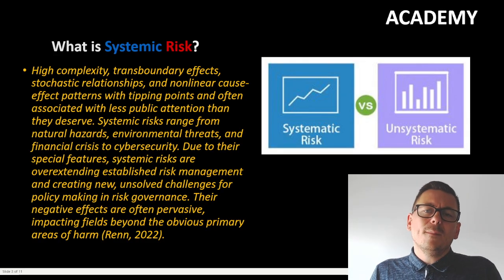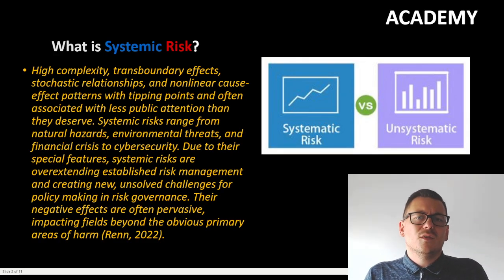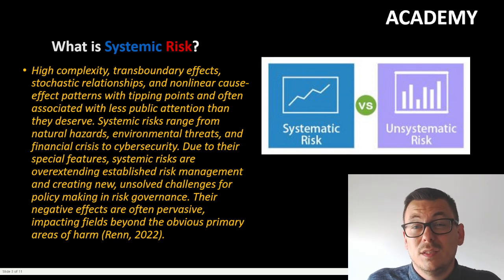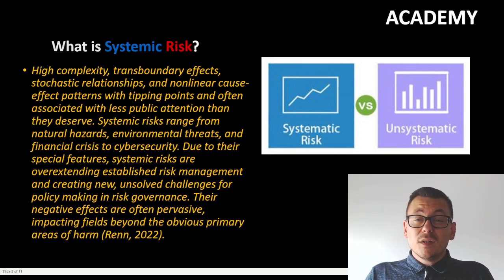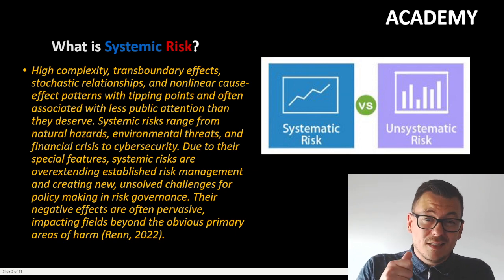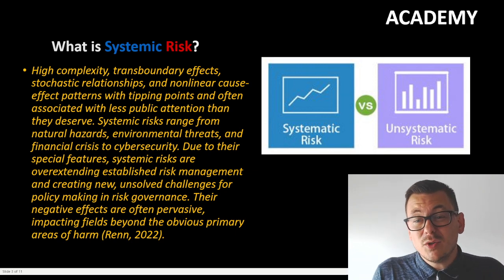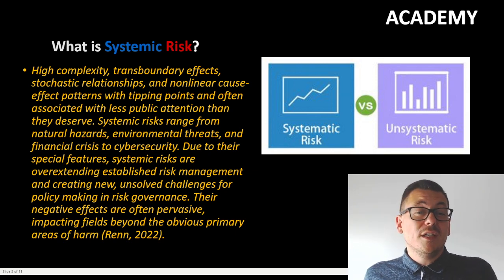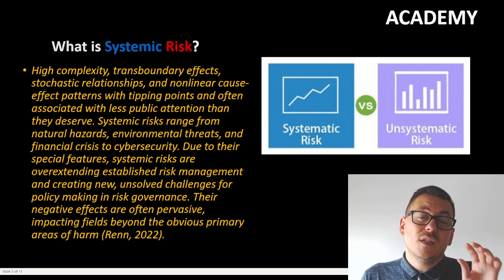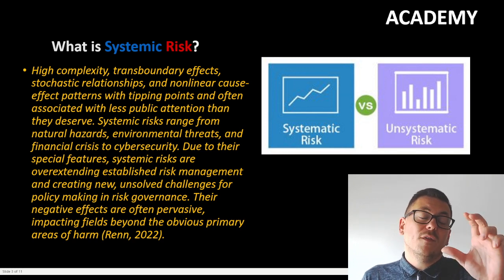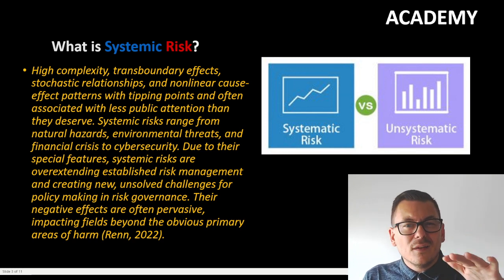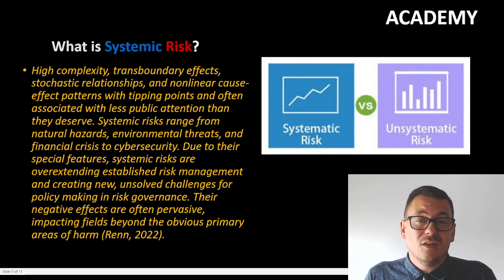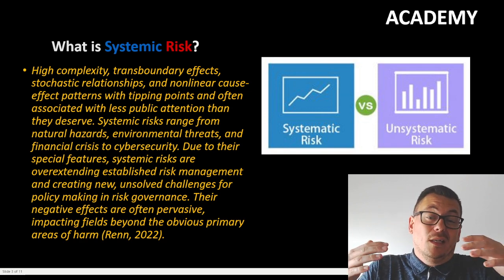I found this amazing definition of systemic risk by Ren from a paper in 2022. He defined systemic risk as having high complexity, transboundary effects, a stochastic relationship, and a non-linear cause-effect pattern with tipping points — and often associated with lesser public attention than they actually deserve because they tend to accumulate.